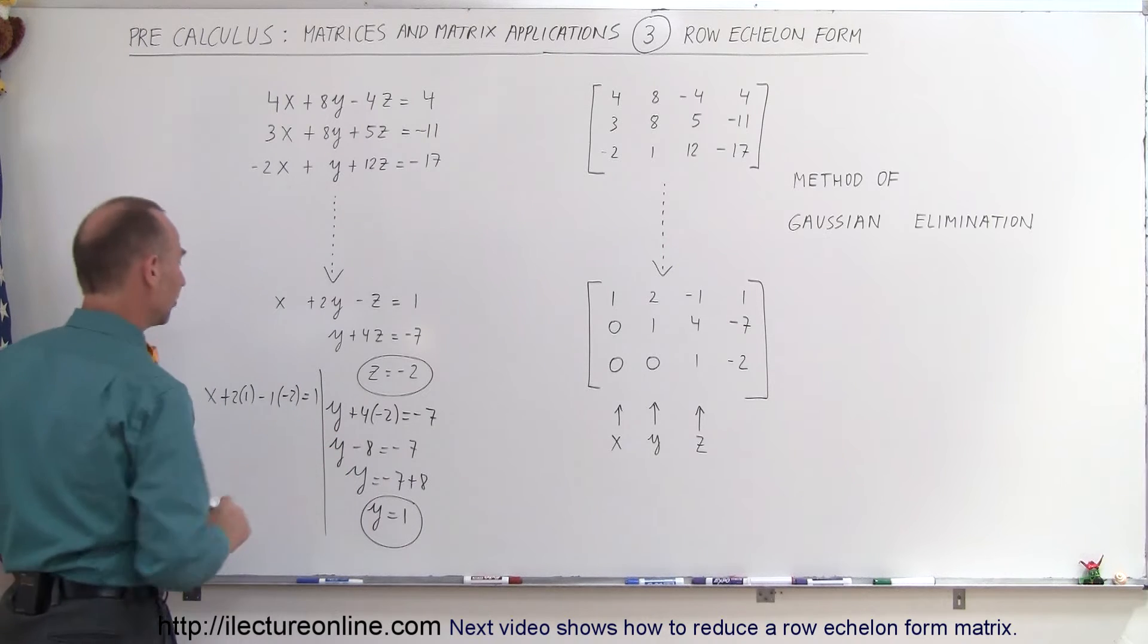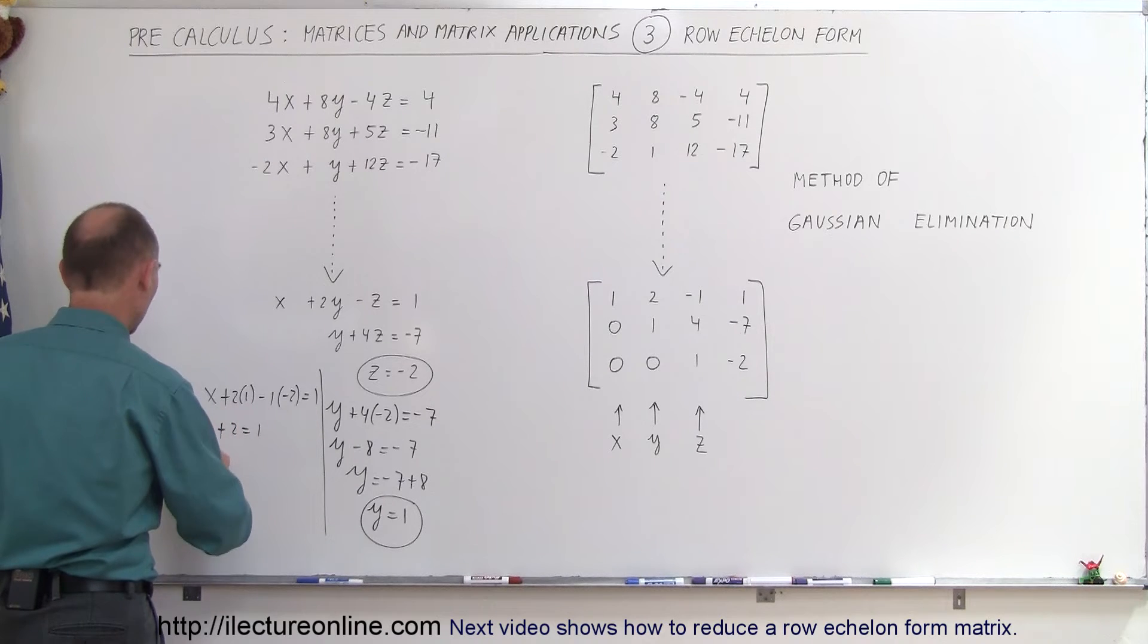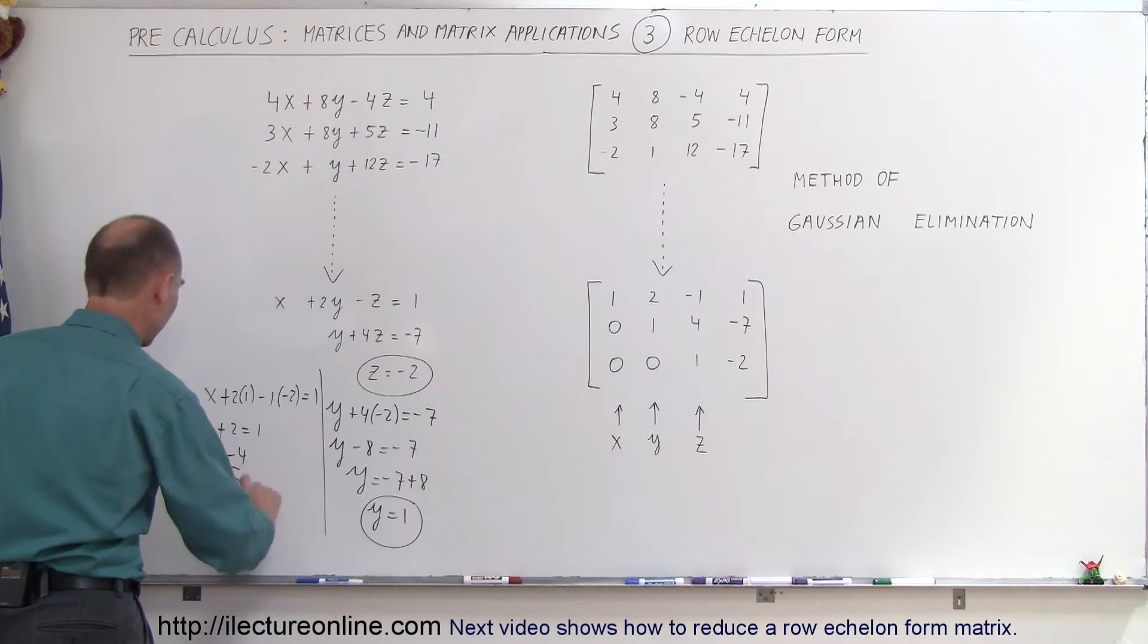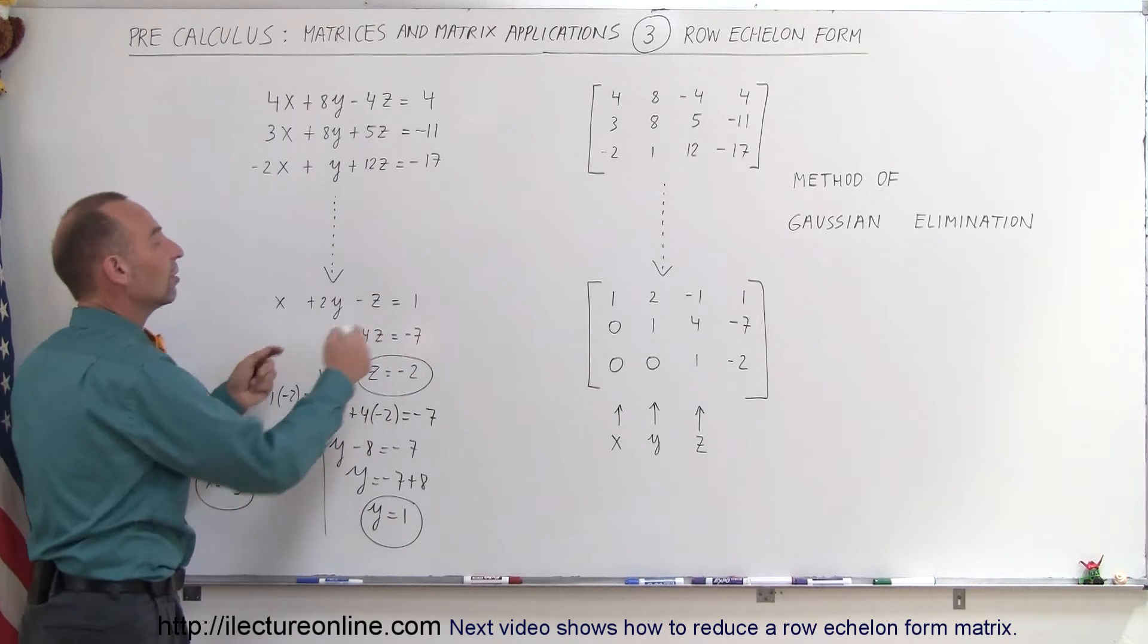We now get x plus 2 times 1 minus 1 times negative 2 is equal to 1. Let's put a line there so we don't get messed up here. So we have x plus 2, plus 2 equals 1, or x equals 1 minus 4, or x equals negative 3. So there we have the three values for x, y, and z once we have it in this format.